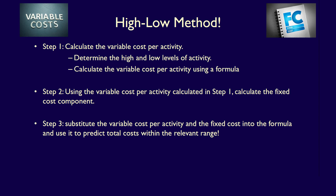Let's quickly walk through the steps for the high-low method. Step 1: calculate the variable cost per activity — determine the high and low levels of activity, use the related high and low costs, and calculate variable cost per activity using the formula. Step 2: using the variable cost per activity from Step 1, calculate the fixed cost component. Step 3: substitute the variable cost per activity and the fixed cost into the formula and use it to predict total costs within the relevant range.